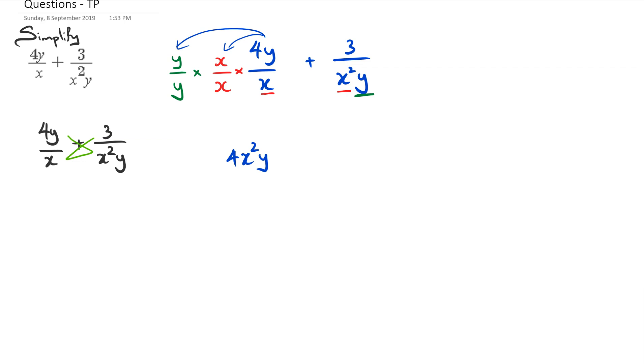When I do this, now I've got in the numerator 4y times y times x, which is equal to 4x squared y, and in the denominator I'm going to have x squared y plus 3 over x squared y. Simplifying this now, it's 4x squared y plus 3 over x squared y.